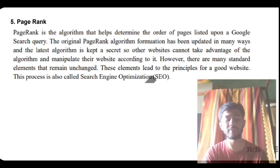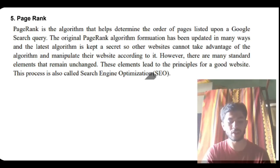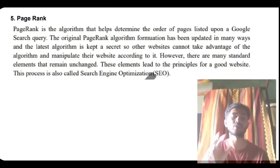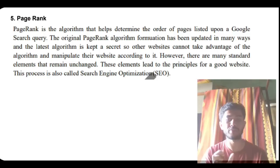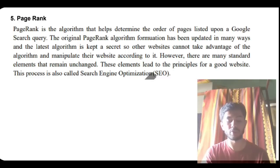The last question is about Page Rank. Page Rank is an algorithm that helps determine which is the most relevant page and ranks it at the top. The algorithm is kept secret because smart users would otherwise optimize their website specifically around it, which would be unfair. Some good website features are mentioned in SEO — Search Engine Optimization. That covers all of Module 5.